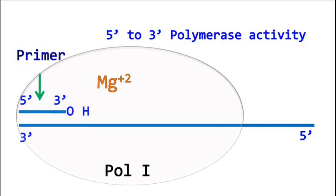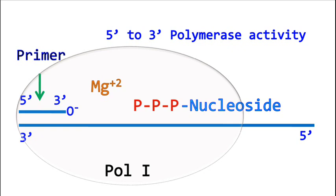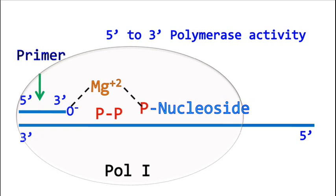The hydroxyl group at three prime end loses its hydrogen and forms an oxyanion. And in presence of magnesium ions, the oxyanion reacts with the alpha phosphoryl group of the dNTPs and completes the reaction.